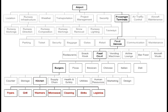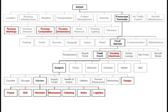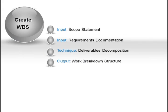We can reach the work package level of decomposition at different levels of our WBS. We don't need to decompose the vending machines deliverable further to understand the activities for achieving it, same for runway material composition or runway dimensions. Everything at a work package level has no additional level of decomposition — there will be a line coming in the top but none going out the bottom. When we finish using the deliverables decomposition technique, we have the first of our four output items: the work breakdown structure.